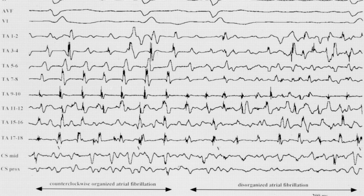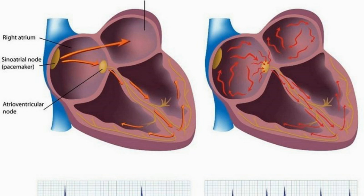The AV node has a refractory period in which it does not transmit impulses. If two impulses reach the AV node, it will transmit the first one. If the second one reaches the AV node during the refractory period, the AV node will not transmit it.